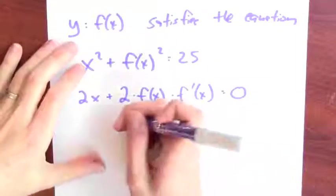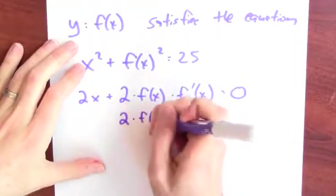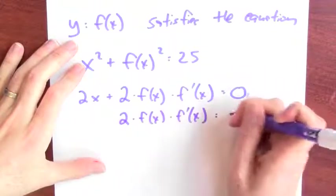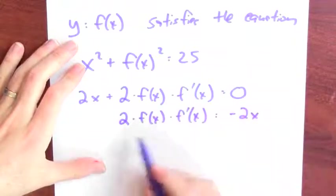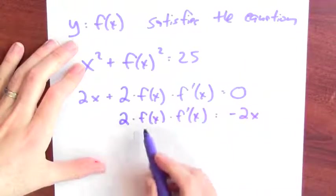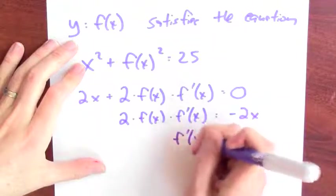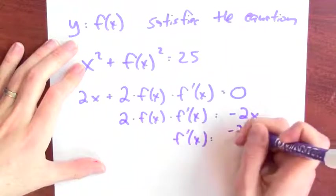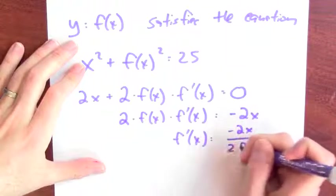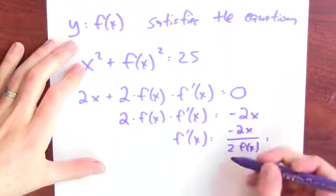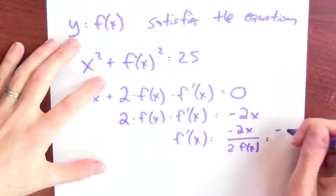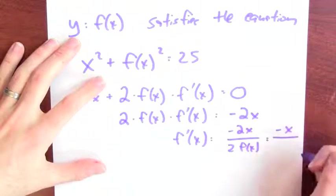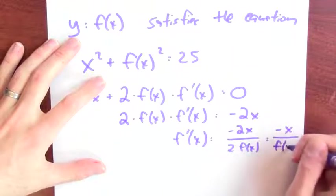Now I can solve. So I'll subtract 2x from both sides and I'm left with 2 times f of x times f prime of x equals negative 2x. And then I'll divide both sides by 2 times f of x and I'll find that f prime of x is minus 2x over 2f of x. And I can cancel those 2's and just get minus x over f of x.